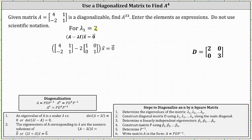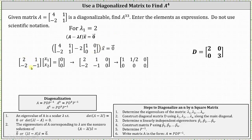Let's begin with lambda sub one equals two. To find an eigenvector, we solve the equation — the difference of matrix A and the product of lambda and the identity matrix times vector x equals a zero vector — which I've already set up below. Let's write the corresponding matrix equation, where the coefficient matrix times vector x equals the zero vector. The first entry in row one is four minus two times one, which is two. The second entry remains one. In the second row, the first entry remains negative two, and the second entry in row two is one minus two times one, which is negative one.